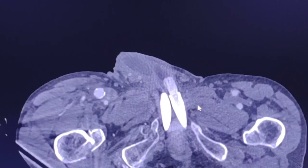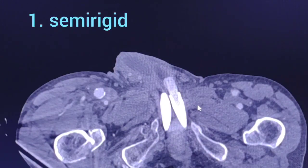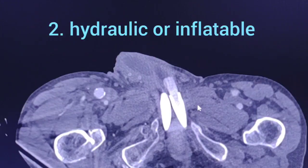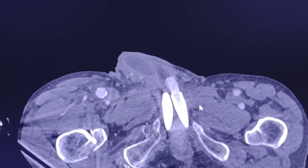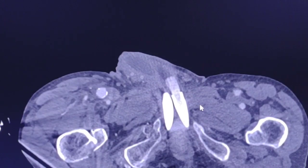There are two main types of penile implants. The first is the semi-rigid penile prosthesis and the second is the hydraulic or inflatable penile prosthesis, with two subtypes: the two-piece and the three-piece.